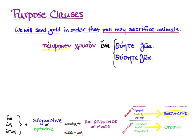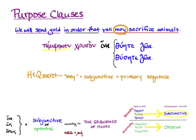Now I want to let you in on a little secret about decoding Hanson and Quinn. Look at the English helping verb 'may.' Hanson and Quinn always translate primary sequence purpose clauses — the subjunctive ones — with the helping verb 'may.' So if you see the subjunctive in a purpose clause, you can reliably translate it as 'may verb.' And vice versa: if you see 'may verb' in an English-to-Greek sentence in Hanson and Quinn, you can reliably use the subjunctive and know you're in primary sequence.